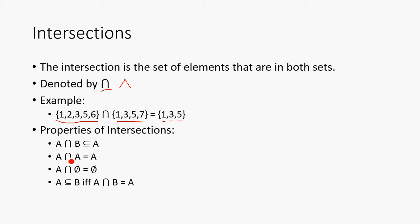So, a few properties of intersections: A intersect B is always going to be a subset or equal to A, and you can say the same about B. A intersect A, obviously, is going to be just A again. And then A intersect the empty set is going to be the empty set. And that makes sense because the empty set doesn't have anything in it. So, this is kind of like multiplying by 0. And another property of subsets is going to be that A is a subset or equal to B if and only if A intersect B is A.